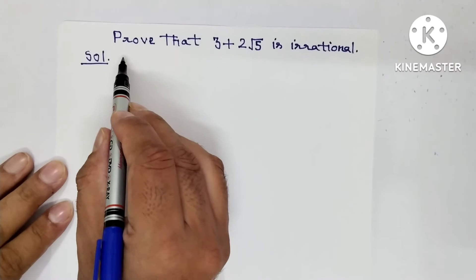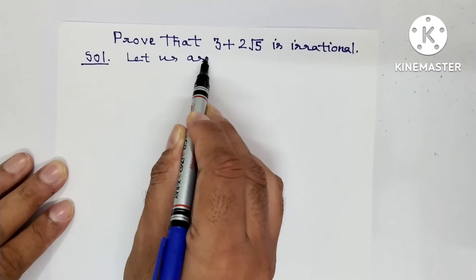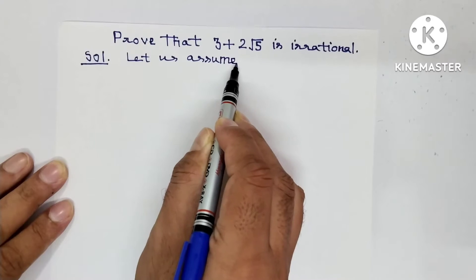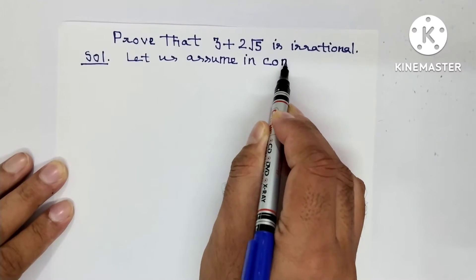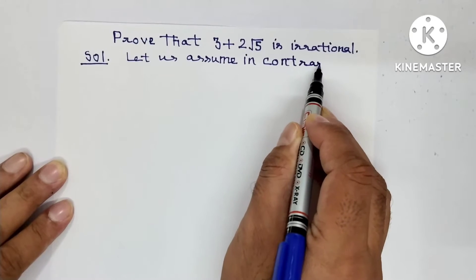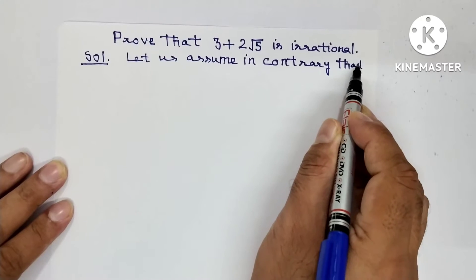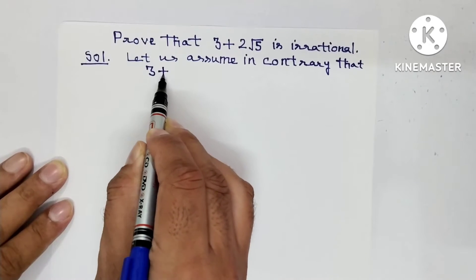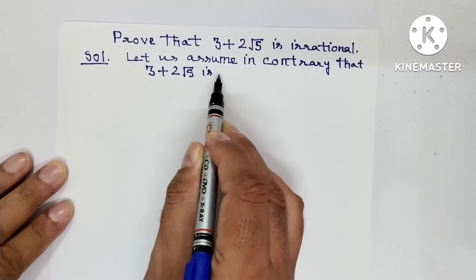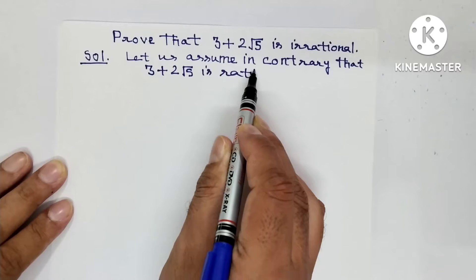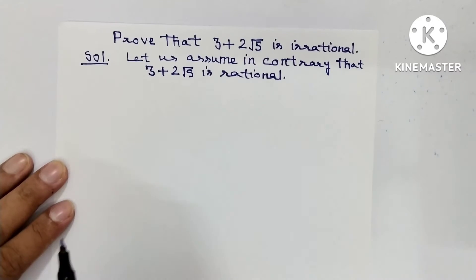So let us assume in contrary that 3 plus 2 root 5 is rational. We know that it is not rational but still we need to assume that it is rational.